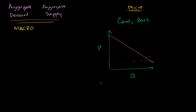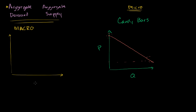Now when we think about aggregate demand, it's going to look very similar, but the idea is quite different. In the macro version, we're talking about aggregate demand for the economy as a whole — not just the market for one good or service. On the horizontal axis we plot real GDP, the actual production of the economy in a given period of time.